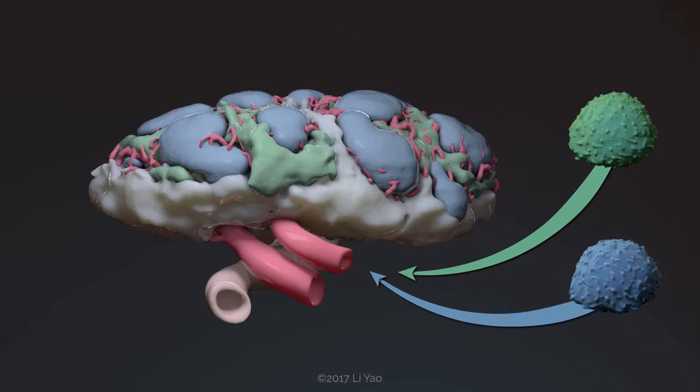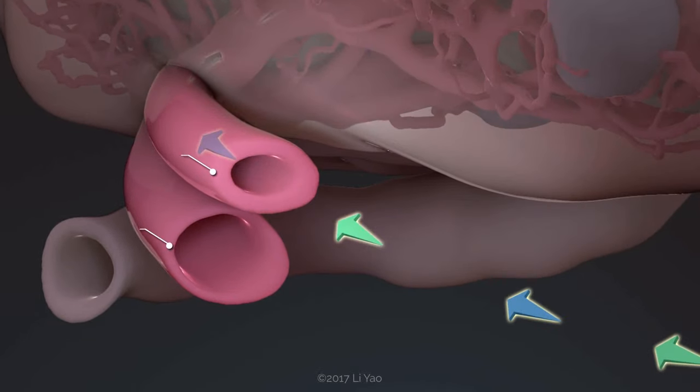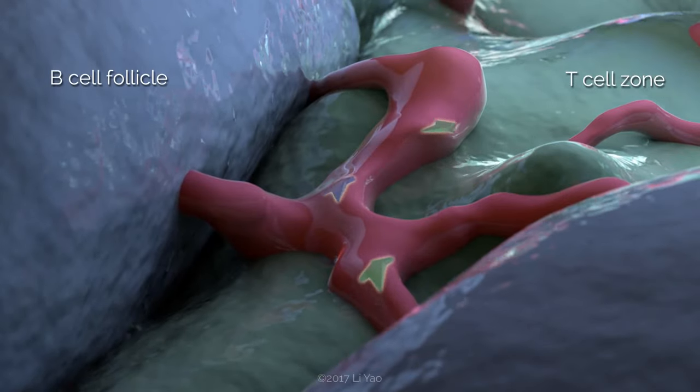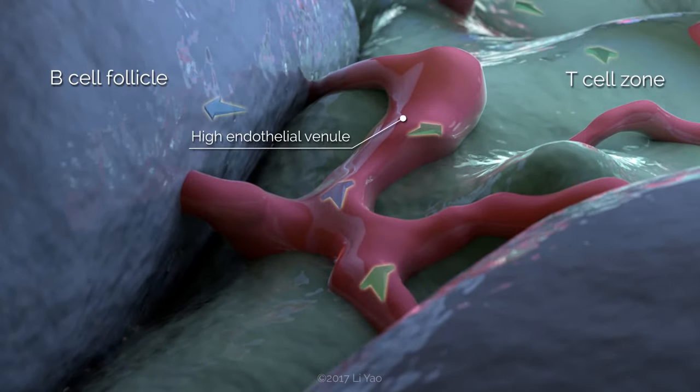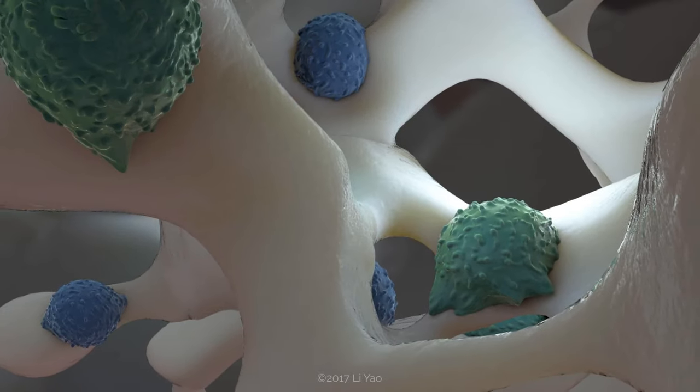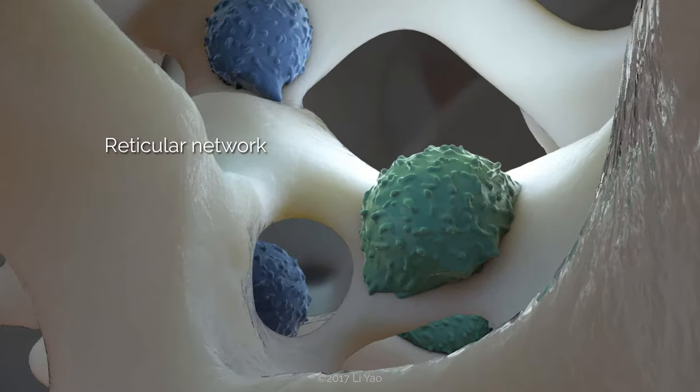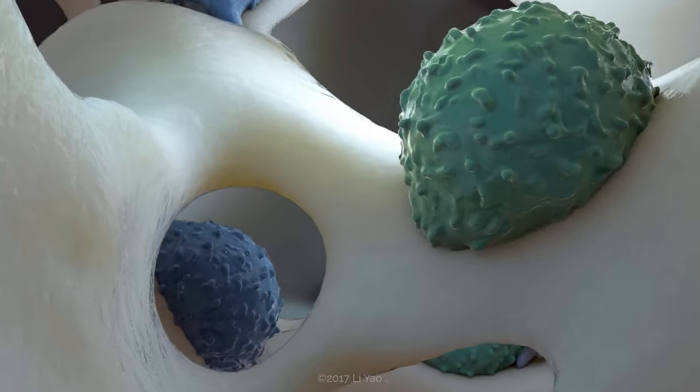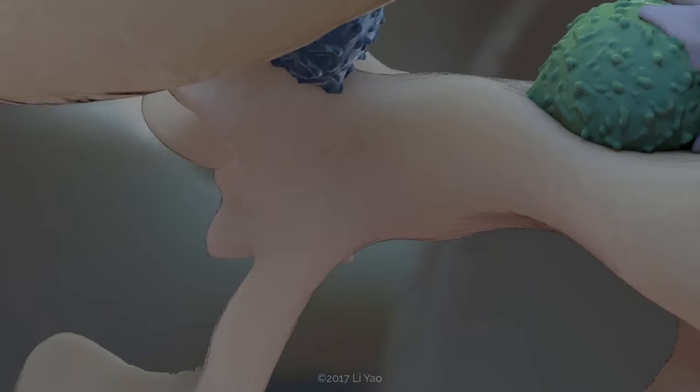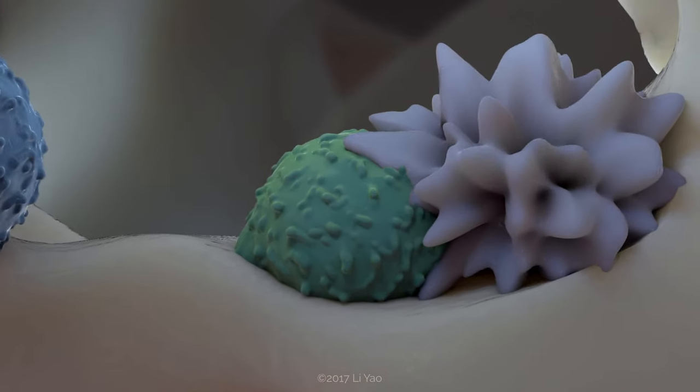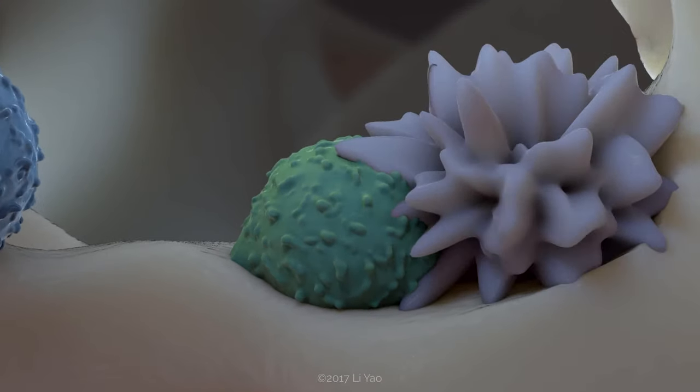T-cells and B-cells enter the lymph node through the blood supply and migrate to their respective compartments through specialized blood vessels called high endothelial venules. The movement of the lymphocytes is guided by the reticular network and molecular cues. This reticular network is a supportive structure throughout the entire lymph node. It provides a crossroad for the interaction of rare clonal precursors of T and B-cells with their cognate antigens.